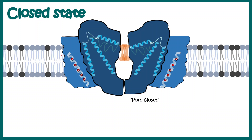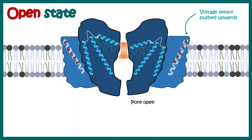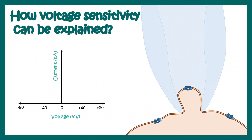Let's understand the different states of these ion channels. There are two alternative states: closed state and open state, and the ion channel can switch between them. Notice that the voltage sensor is pushed upwards in the open state, which tells us about the voltage sensitivity of the potassium channel. In the open state the pore is open and potassium can pass through.